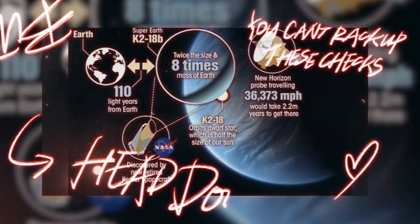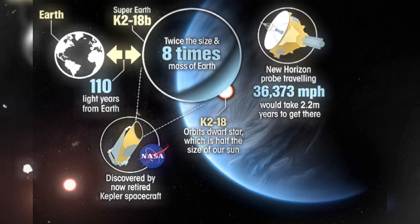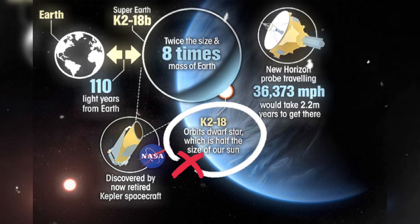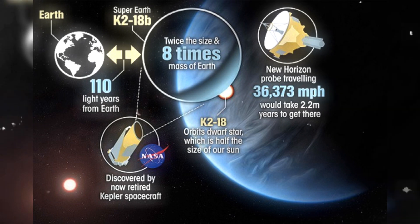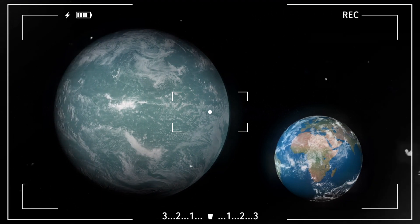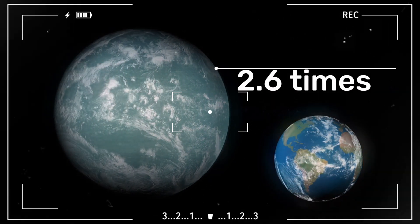Here's essential information about this potentially life-harboring exoplanet. K-218b revolves around the cold dwarf star K-218 and is situated approximately 120 light-years away from Earth in the Leo constellation. This exoplanet surpasses Earth in size, being 8.6 times larger with a radius 2.6 times that of our planet.